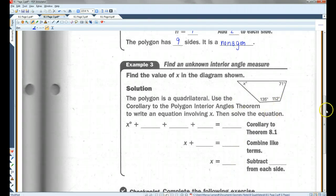Example 3. Find the value of x in the diagram shown. The polygon is a quadrilateral. Use the corollary to the polygon interior angles theorem to write an equation involving x. Okay, so if you guys remember, we just learned that a quadrilateral, all the angles are going to add up to 360. Now, if you were to plug in n minus 2 times 180, if n is 4, 2 times 180 is 360, you would get the same thing. This is just kind of a shortcut.